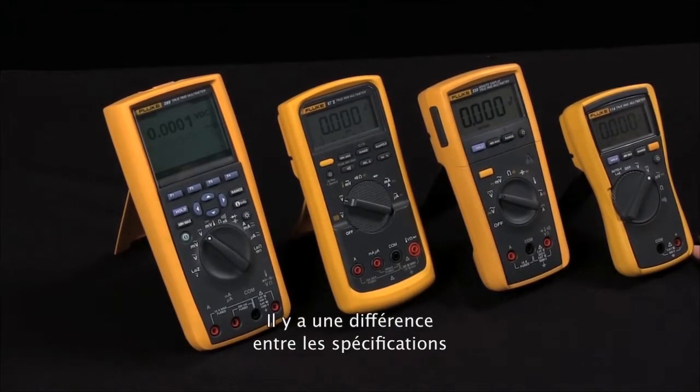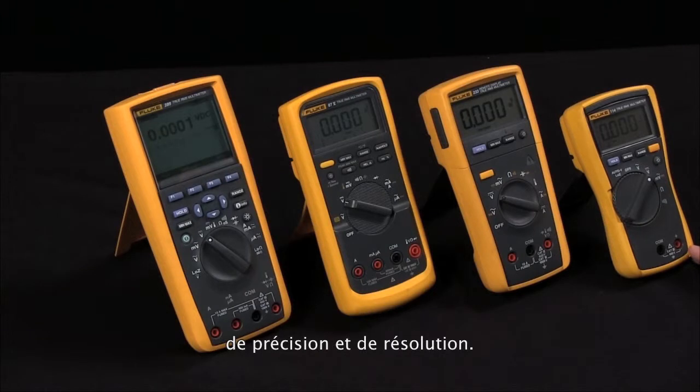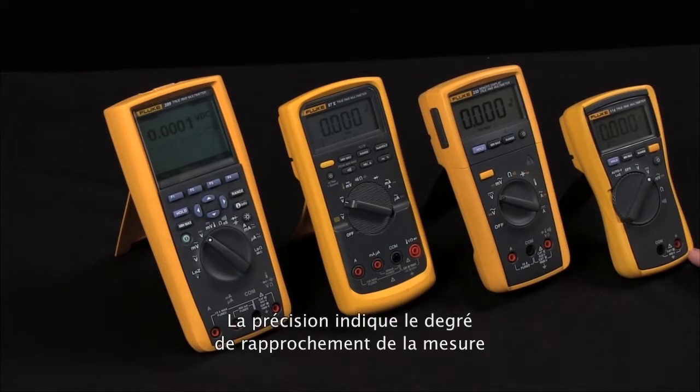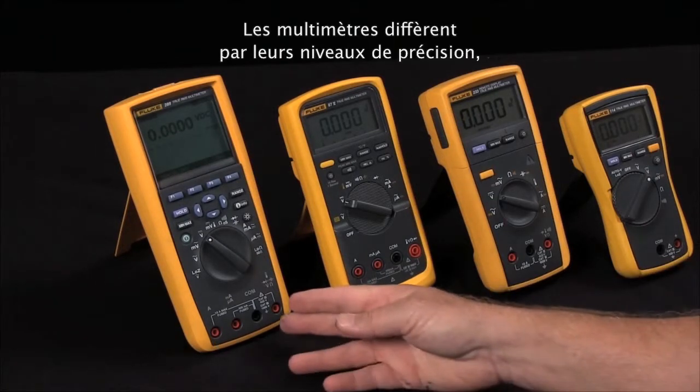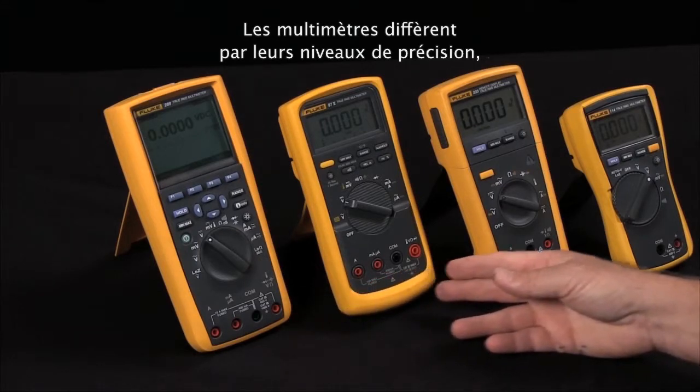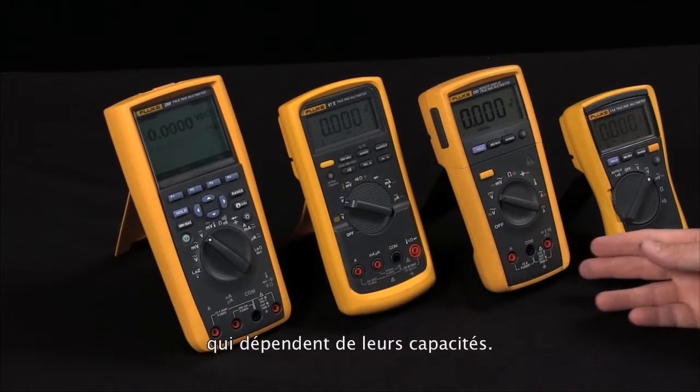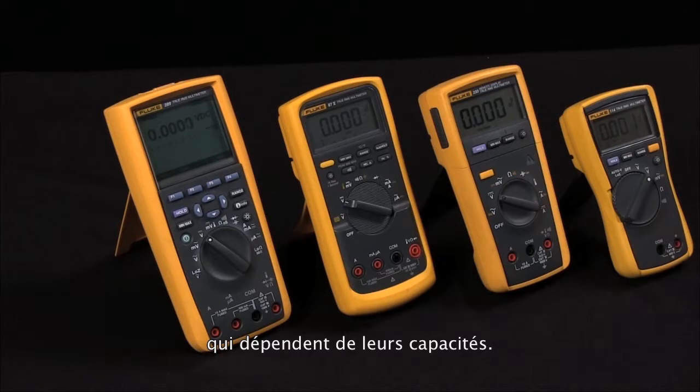There's a difference between the specifications of accuracy and resolution. Accuracy relates to how closely the measurement you're taking is to the true value of that measurement. Different multimeters will have different levels of accuracy depending on the capabilities within that multimeter.